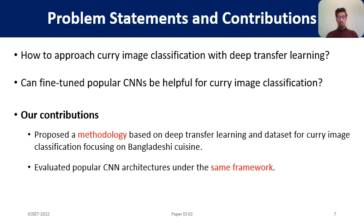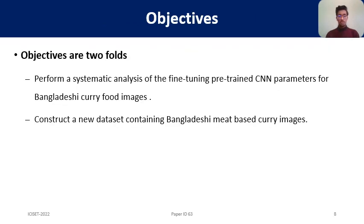Our contributions are as follows. One, we proposed a methodology based on deep transfer learning and a dataset for curry image classification focusing on Bangladeshi cuisine. Two, we evaluated popular CNN architectures under the same framework. Our objectives are: one, to perform a systematic analysis of fine-tuning pre-trained CNN parameters for Bangladeshi curry food images; and two, to construct a new dataset containing Bangladeshi meat-based curry images.